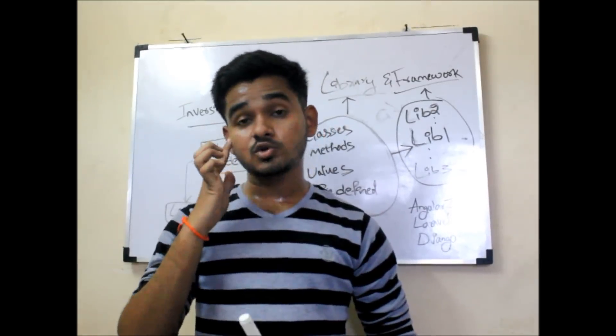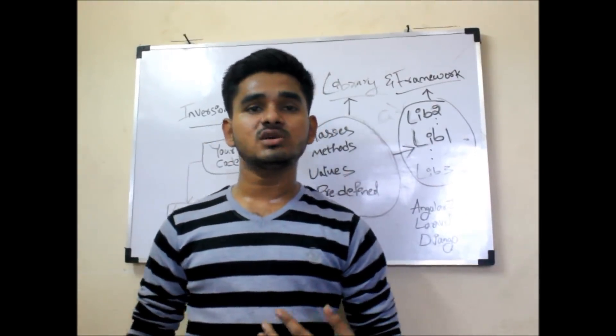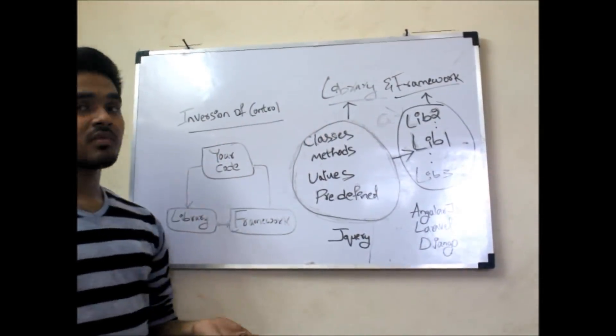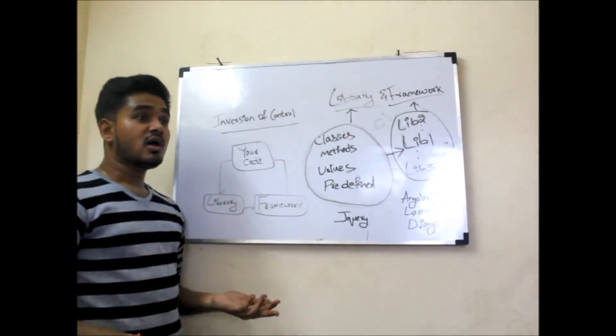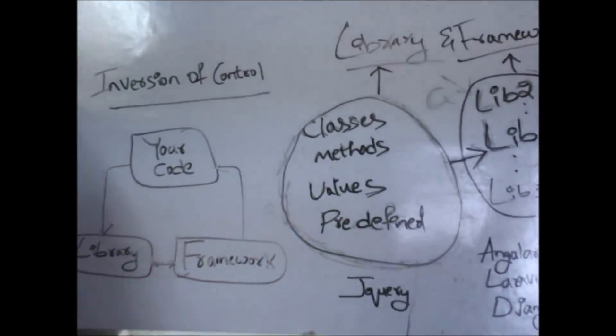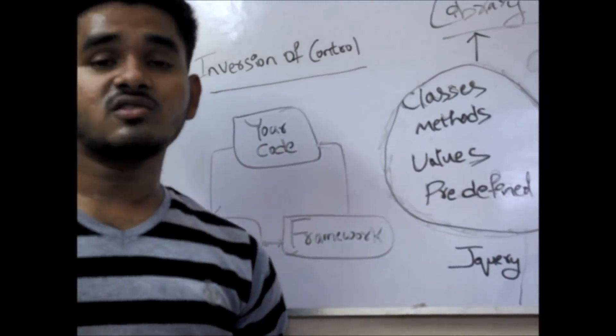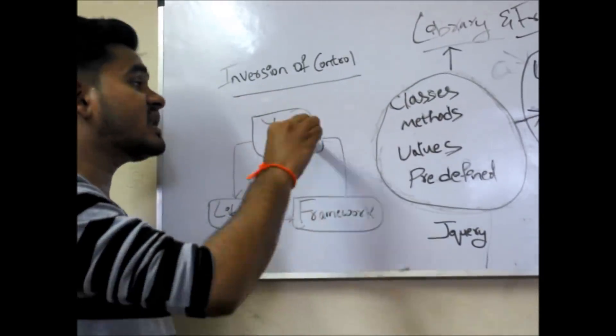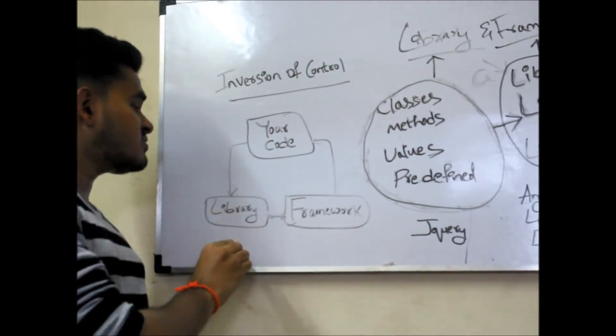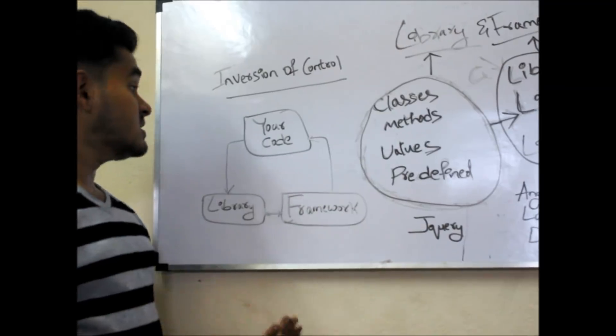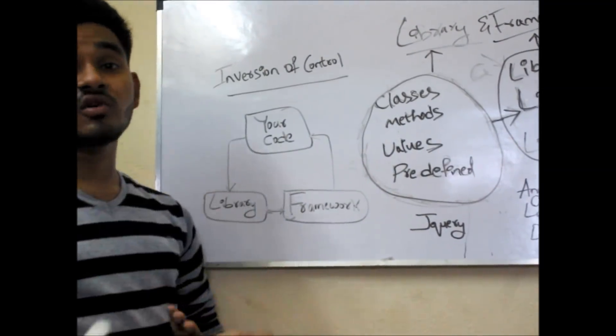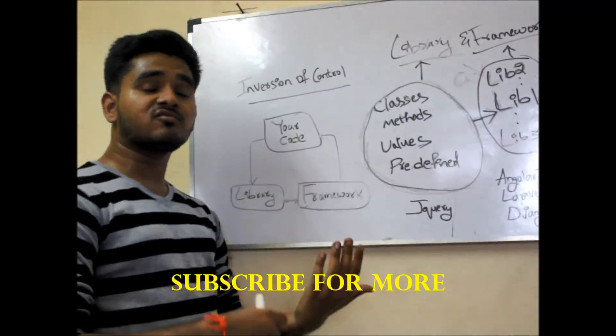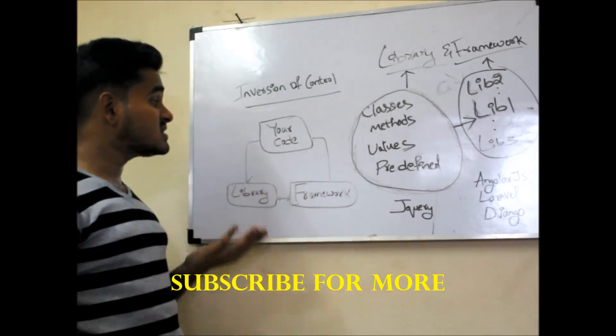And one more topic to discuss about the relation between these two is inversion of control. This is your code. If you want to access something from a library, you need to request the library. But if you want to access something from a framework, the framework requests your code and your code requests the library. This is an inversion. Simply, you request the library. But in framework, framework requests you. It is the inversion of control.